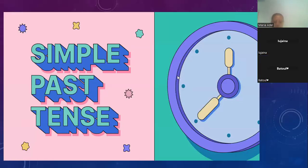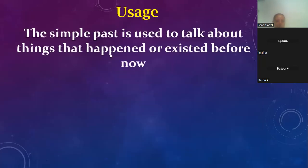About the past simple? The past simple — we use it to talk about how things happened or existed before now. It could be one minute ago, but it's finished.